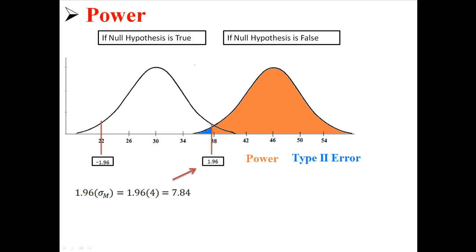So first of all, what I'm going to do is find out, I'm going to multiply the standard error by 1.96. 1.96 is how many standard errors we are from the mean. So 1.96 times the standard error of 4 is 7.84. That means we're 7.84 above the original mean of 30. So that means that value exists. 1.96 exists at the value of 37.84. So we can put that right there.